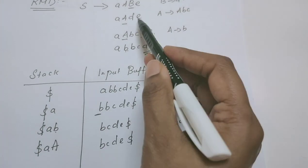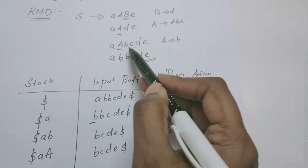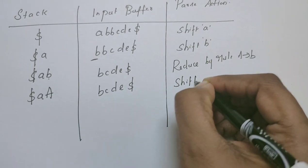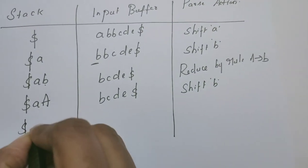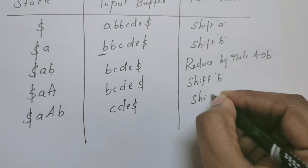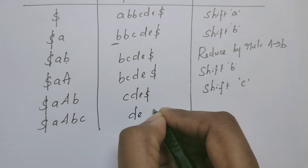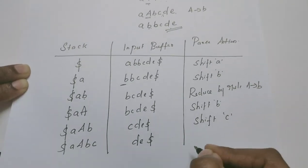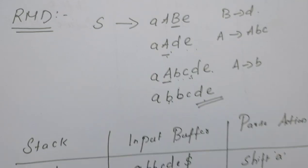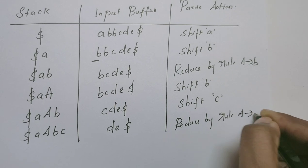Following the RMD in reverse, the entire A, B, C is to be reduced to A. So shift B — stack contains dollar, A, B; input buffer contains C, D, E, dollar. Next parsing action is also shift — shift C. Stack contains dollar, A, A, B, C; input buffer contains D, E, dollar. Now reduce by the rule A derives A, B, C. Stack now contains dollar, A — this entire A, B, C is reduced to A. Input buffer contains D, E, dollar.